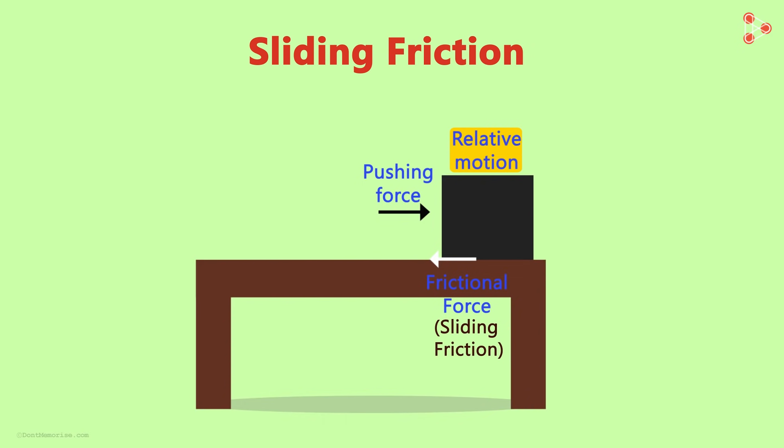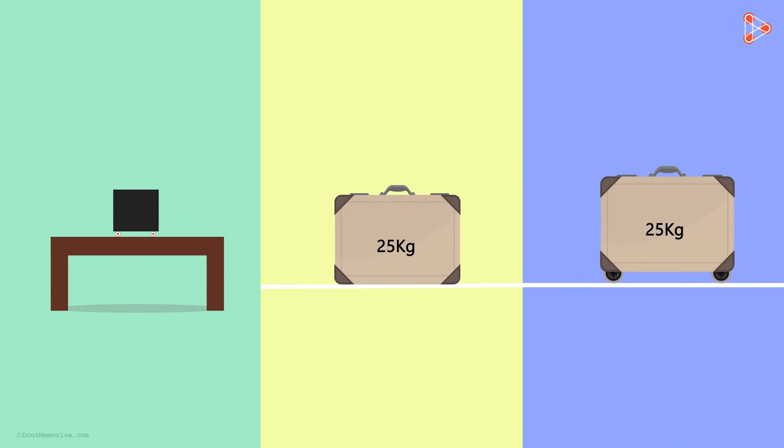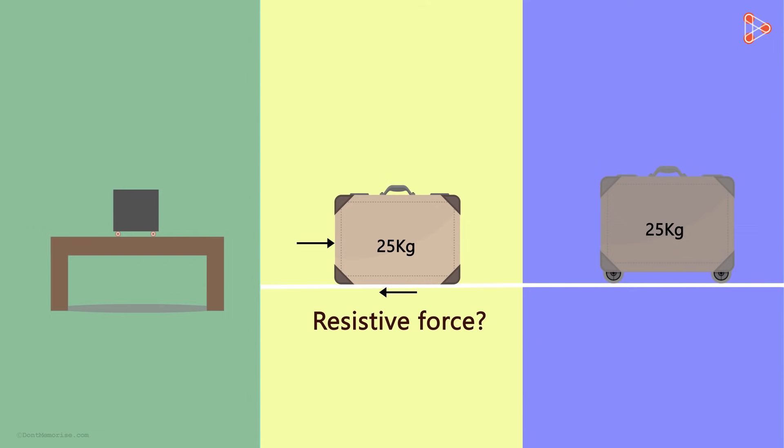Because there is movement involved, this force is also called kinetic friction. Now consider the example of the luggage in which we don't have the wheels under it. When we move the luggage, what will the resistive force applied by the ground be called? Yes, sliding friction.